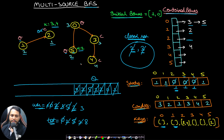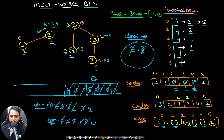Dequeue node 3 — status is open. No keys. Add its candies — total becomes 11. Its adjacency list has node 4, so append 4 to the queue. Dequeue node 4 — status is open. No keys. Add candies — total becomes 15. No adjacent nodes. Queue is now empty — multi-source BFS is complete. The final total of 15 is the maximum number of candies.